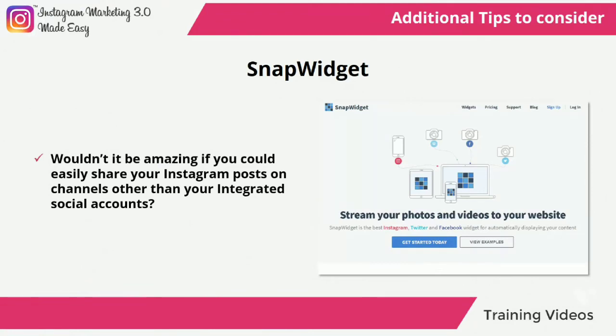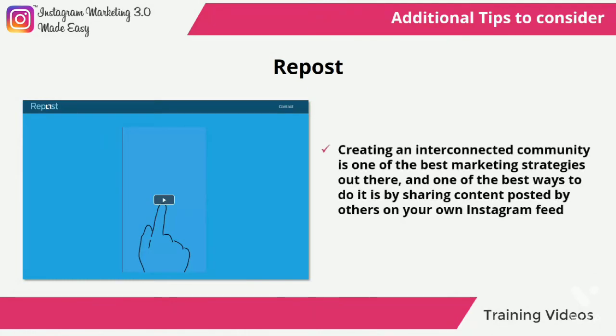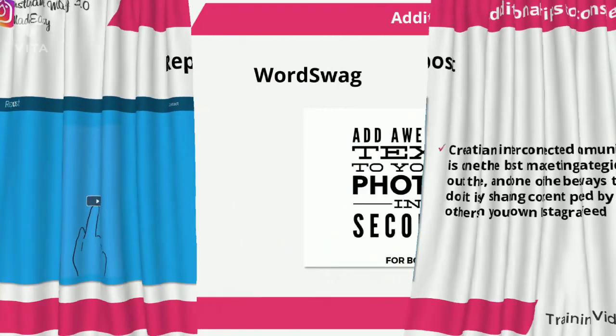Snap Widget — wouldn't it be amazing if you could easily share your Instagram posts on channels other than your integrated social accounts? You can use Snap Widget to easily embed your Instagram feed directly to your website on autopilot. Repost — creating an interconnected community is one of the best marketing strategies out there, and one of the best ways to do it is by sharing content posted by others on your own Instagram feed. The Repost app will allow you to do it the easy way — by letting you repost photos and videos from other business accounts, it will also give them credit, which can help you to attract followers from other popular accounts.